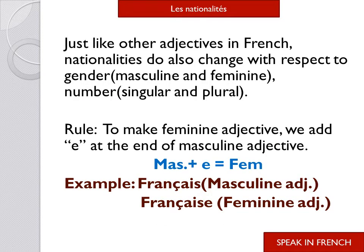Just like other adjectives in French, nationalities also change with respect to gender — masculine and feminine — or number, either singular or plural. There is another video on adjectives where you can see how adjectives change with respect to gender and number; the link is in the description box. To make a feminine adjective, the thumb rule is to add 'e' at the end of the masculine adjective.